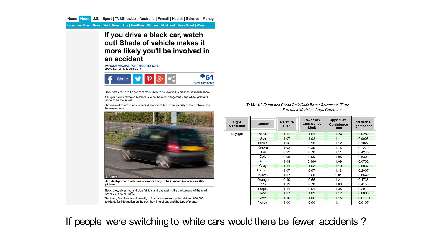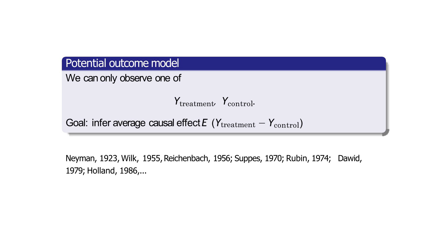There are two major causal frameworks I want to briefly show. The first is the potential outcome model, which makes more sense when you have one binary action: either not do anything or take an action — leave gene activities as they are or knock down the gene, leave cars as they are or paint them white, don't take a medicine or take it. Under both, you presume an outcome: one if you take the action, one as the control.